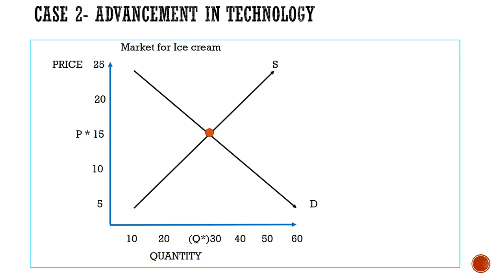Again, we're analyzing the market for ice cream. The scenario is there is an advancement in technology — a new machine which allows you to produce ice creams more efficiently and requires fewer resources. In simpler words, you can produce more ice creams in less time and might require less labor. Definitely your supply increases, so the supply curve shifts towards the right. At the new equilibrium, the price has decreased to 10 and quantity is at 40.